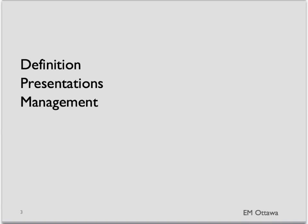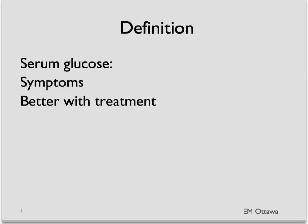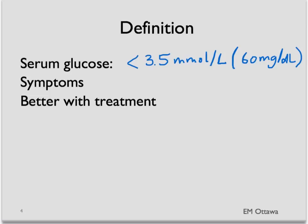In this segment, we'll go through the definition of hypoglycemia, how patients might present, and once they get to the emergency department, what should we do with them? First, how do we define hypoglycemia? It is defined as a serum blood glucose of less than 3.5 millimoles per liter, or 60 milligrams per deciliter.